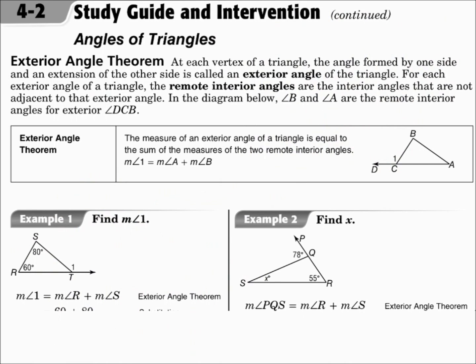The exterior angle theorem says that the exterior angle is the sum of the remote interior angles. If you extend a side, the angle outside the triangle is the exterior angle. The two remote interior angles are the two angles on the other side of the triangle — not the one adjacent to the exterior angle, but the other two.